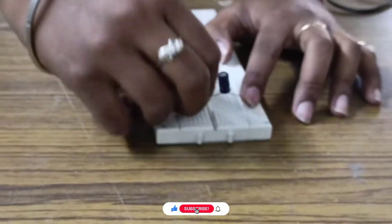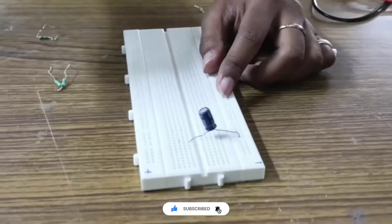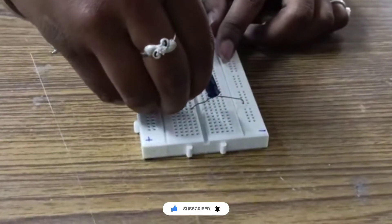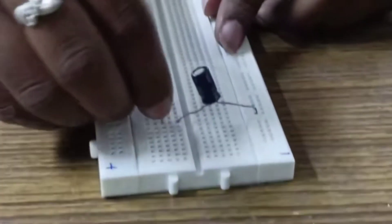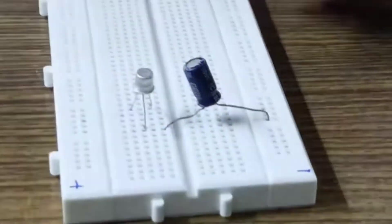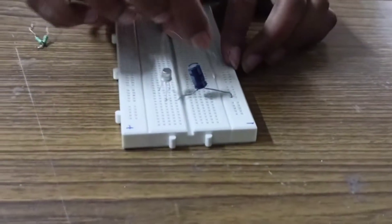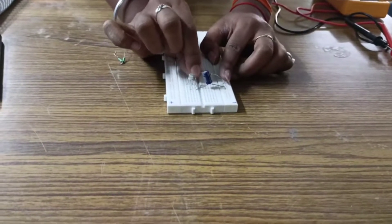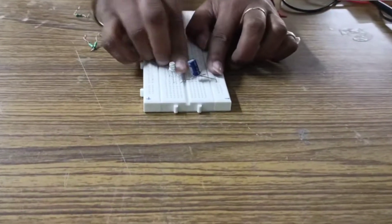To understand UJT triggering techniques, we first connect the 100 microfarad capacitor on the breadboard, then the UJT in series connection with the capacitor. Next, we connect a 27 ohm resistance parallel with the capacitor and a 10 kilo ohm resistor.